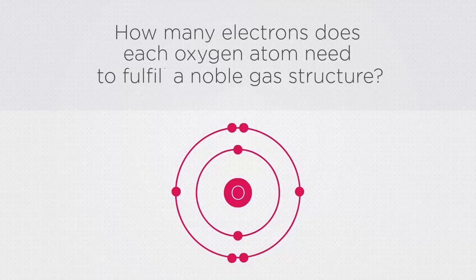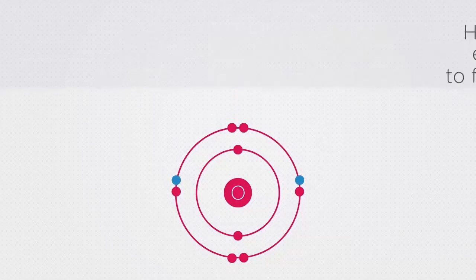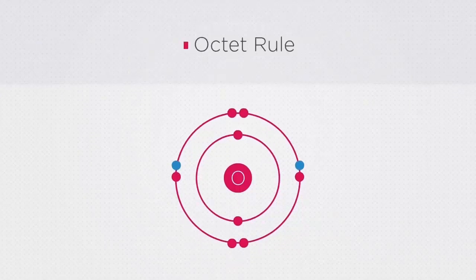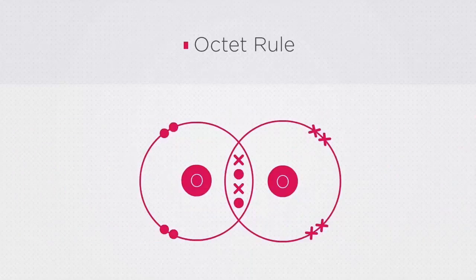The answer is that each oxygen atom needs two more electrons before fulfilling a noble gas structure. This is also called the octet rule. In this example, the octet rule is fulfilled because each oxygen atom shares two electrons in the outer shell, forming an O2 molecule.